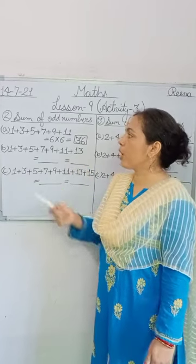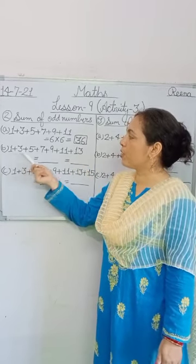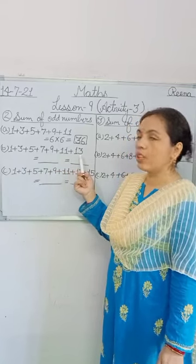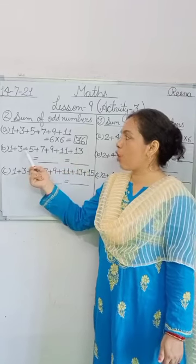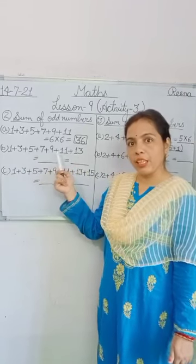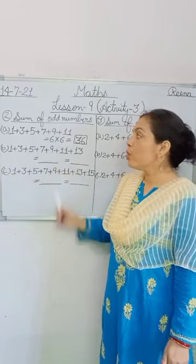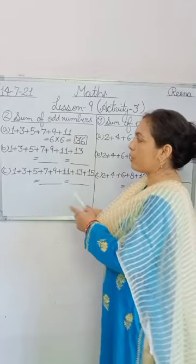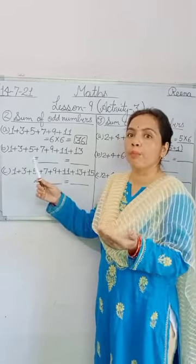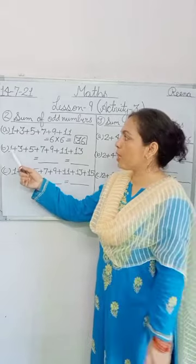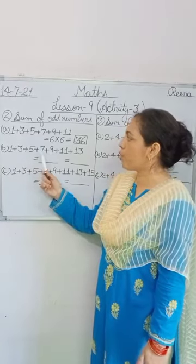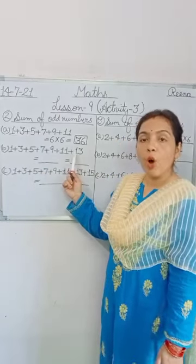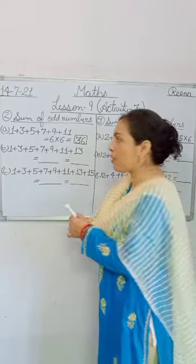In Part B, you have been given 1, 3, 5, 7, 9, 11, 13 — all numbers in the form of addition. According to the pattern, you first count your numbers. How many numbers do you have? 1, 2, 3, 4, 5, 6, 7. How many total odd numbers? 7.